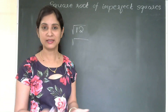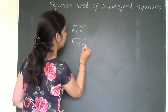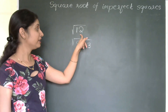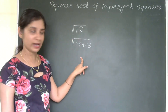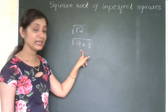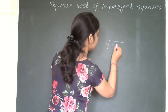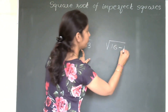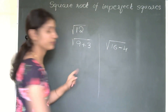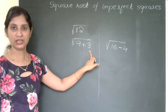12 can be written as 9 plus 3. 9 is the nearest perfect square. You can also take 16 — in that case, 12 is written as 16 minus 4. I will show both ways.